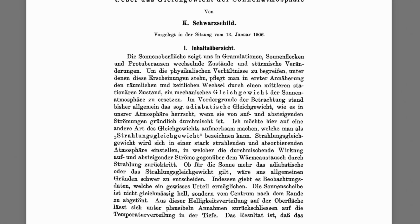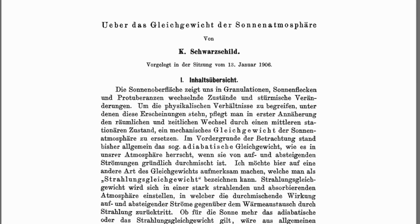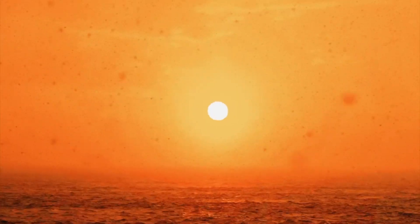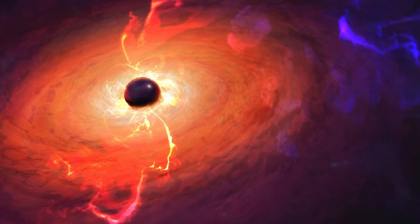In 1896, he completed his PhD thesis, which was titled On the Equilibrium of the Sun's Atmosphere, under the supervision of Hugo von Seeliger. This work laid the foundation for later studies in stellar structure and atmospheric modeling, and influenced future work by Arthur Eddington and Subrahmanyan Chandrasekhar.